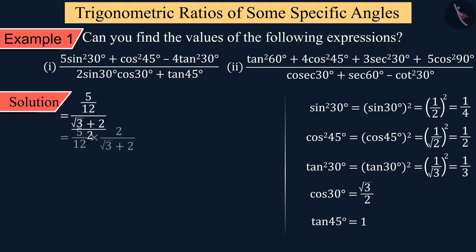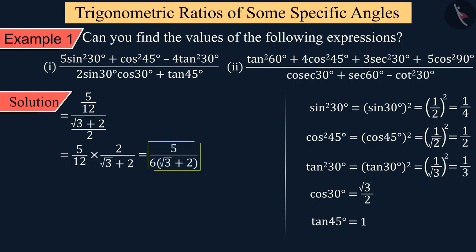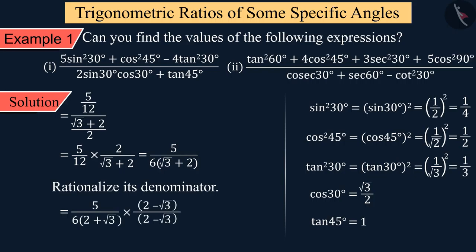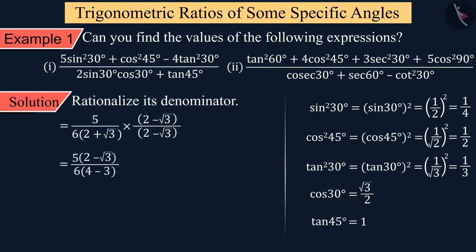Therefore, the value of the equation is 5/6 multiplied by (√3 + 2). To simplify the value, we rationalize its denominator, from which we get the value as 5(2 − √3)/6.